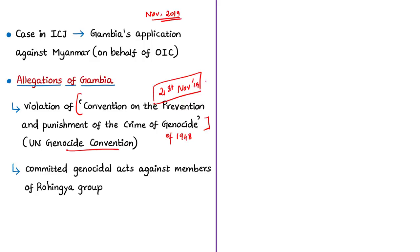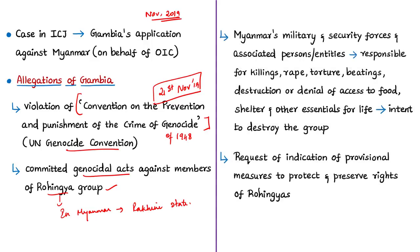Gambia alleged that Myanmar has committed genocidal acts against the Rohingya group and continues to do so. Rohingyas are a distinct ethnic, racial, and religious group residing primarily in Myanmar's Rakhine state. Gambia alleged that Myanmar's military, security forces, and persons acting under their direction have been responsible for killings, rape, other forms of sexual violence, torture, beatings, cruel treatment, and destruction or denial of access to food, shelter, and other essentials of life to the Rohingyas — all with the intent to destroy the Rohingya group.